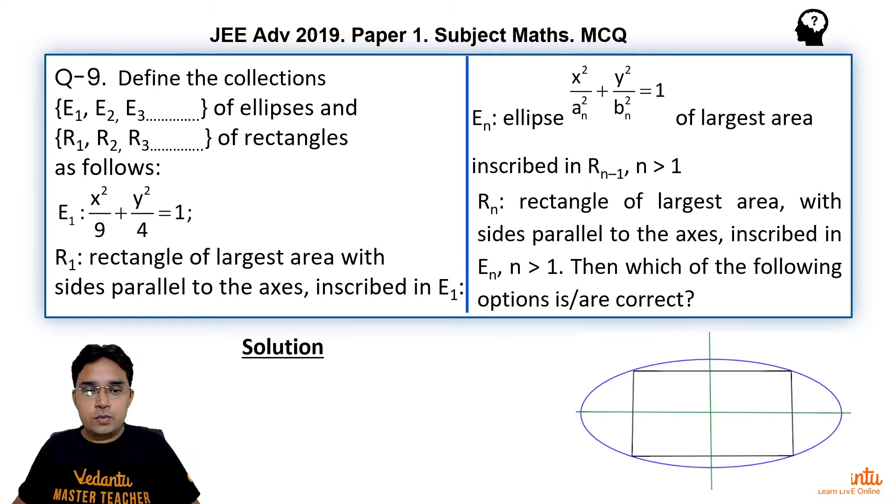Let us see how to solve this question. We are given one standard ellipse whose major axis is along x-axis and minor axis is along y-axis. We are supposed to inscribe a rectangle whose sides are parallel to its axes, that means parallel to x-axis and parallel to y-axis. Let us call this rectangle to be A, B, C and D.